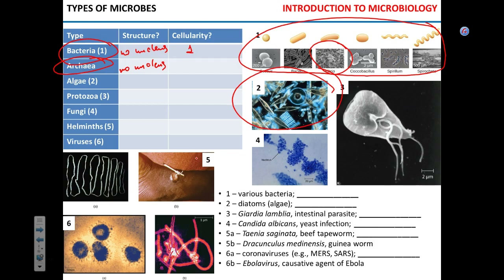Algae are eukaryotes — they have a nucleus. They can be unicellular, like diatoms, or they can be multicellular. If you go into a lake or the ocean and swim, you will see multicellular algae. So algae can be unicellular or multicellular.